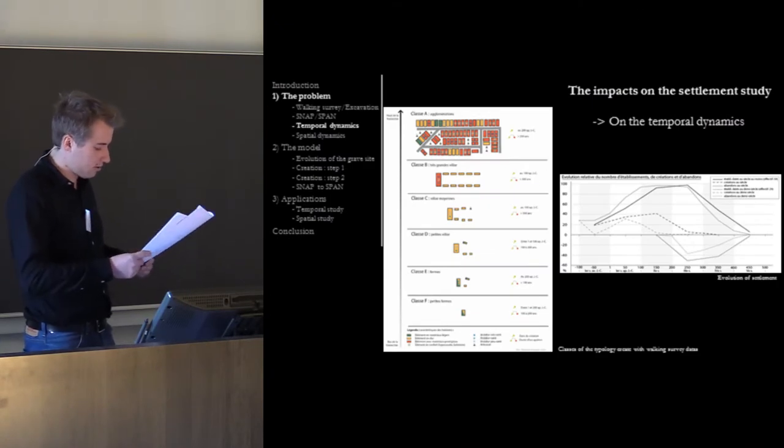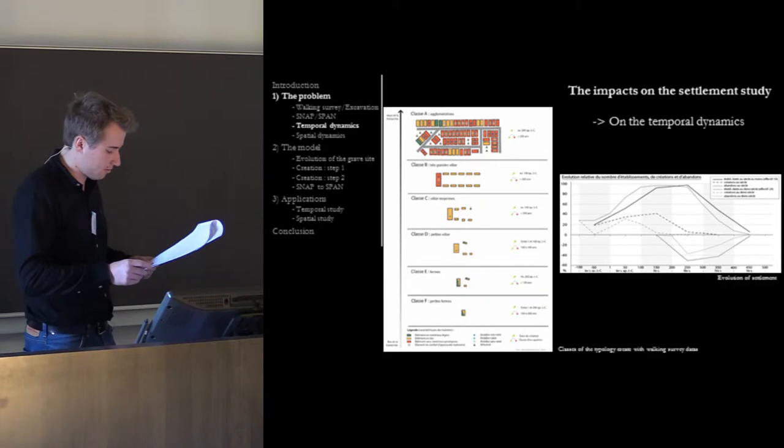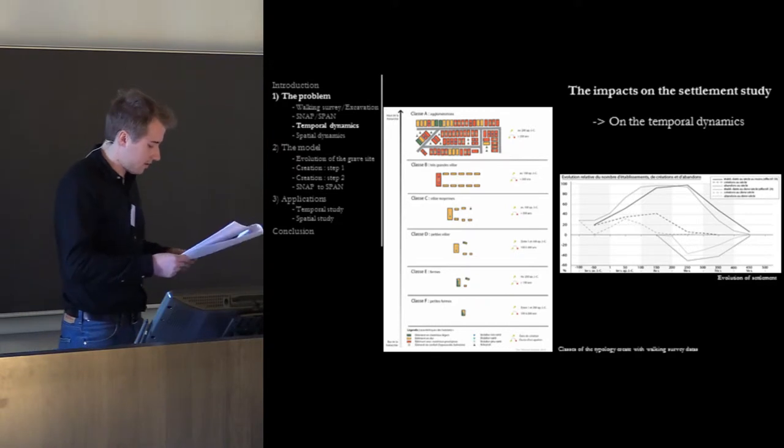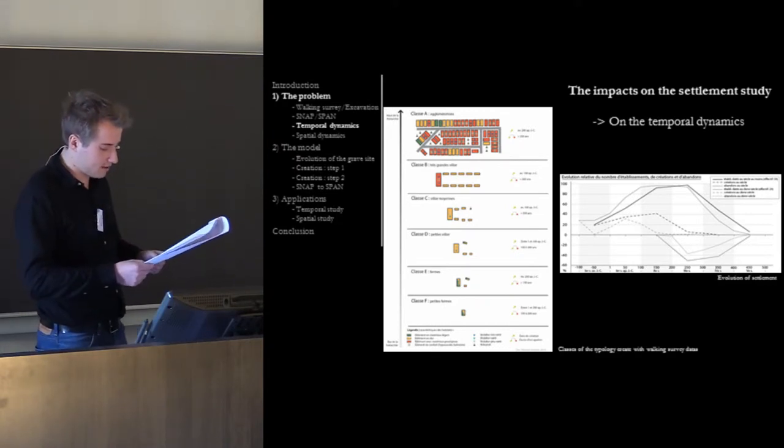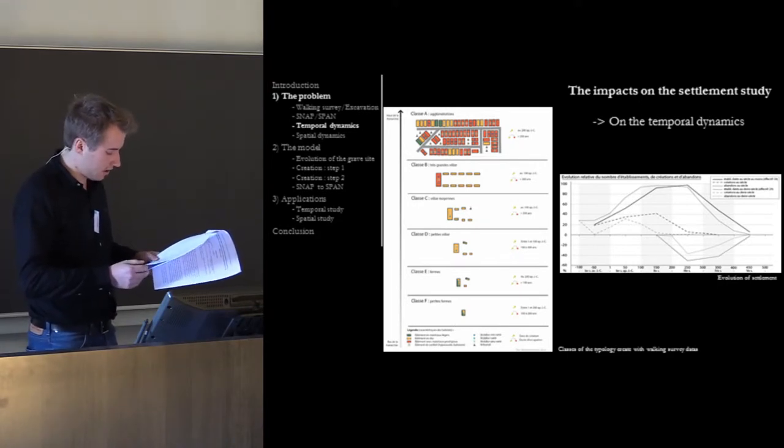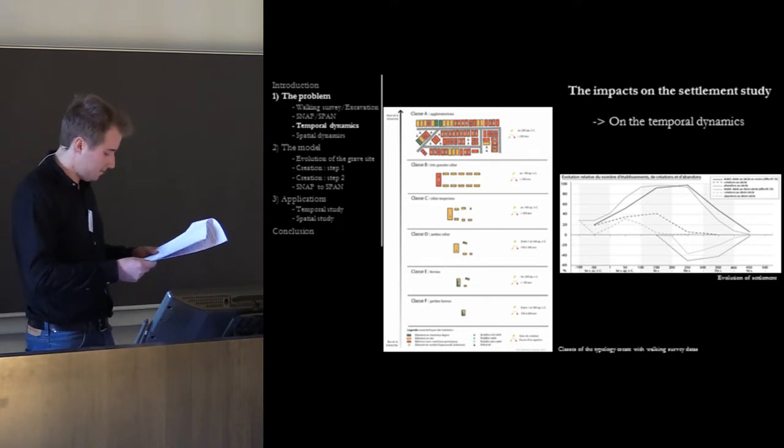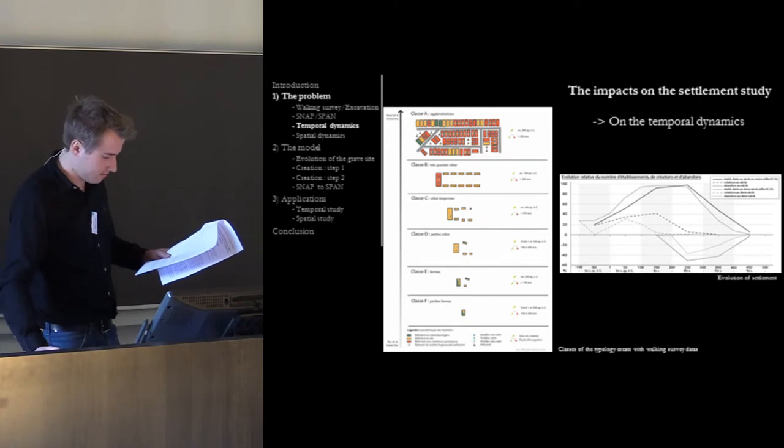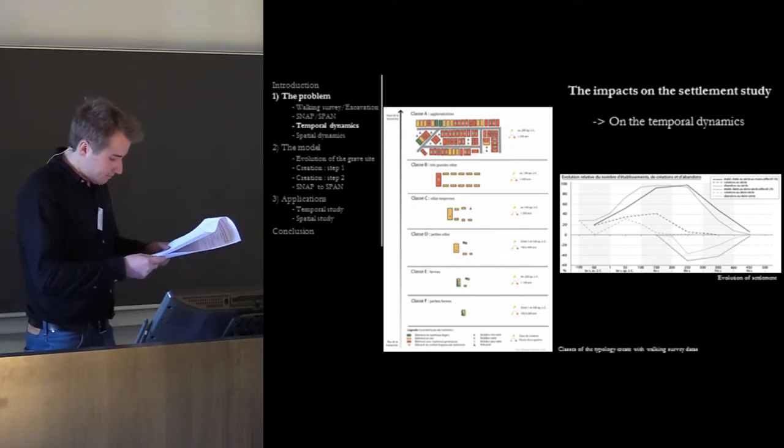First of all, at the level of the temporal dynamics of the system of occupation. With the data of walking survey, as already specified, it is impossible to recount the story of settlement, to connect its various characteristics discovered to the real phases of its existence, to follow its architectural, economic and social evolution. Let us take a settlement discovered in field walking existing from the 1st to the 4th century AD. During the creation of the typology using walking data, the settlement possesses virtually the same hierarchical status over its whole existence.